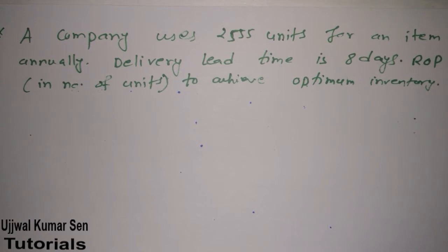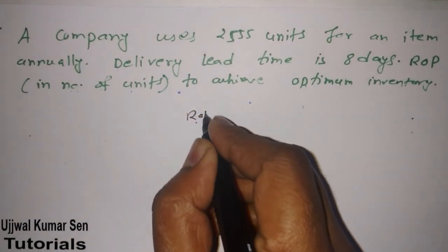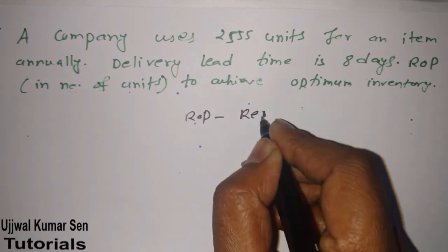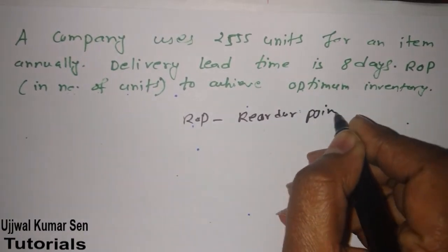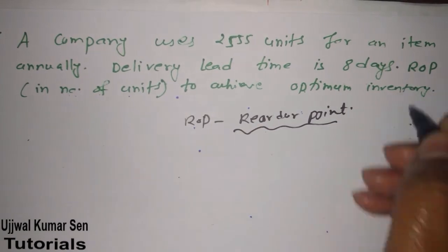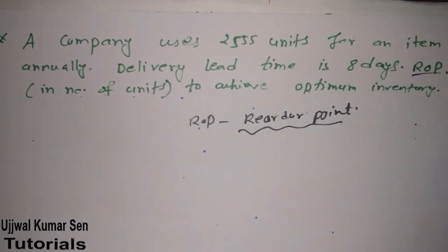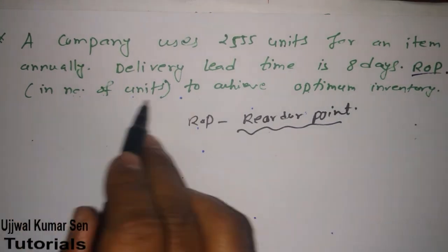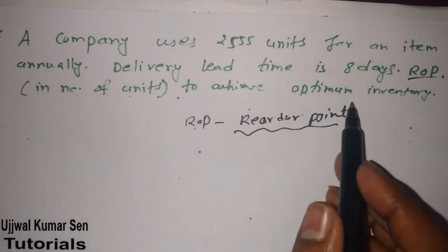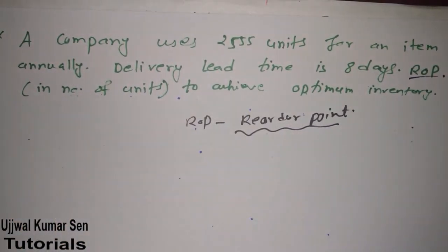In questions, you'll usually see 'reorder point' written out, not ROP in short. The reorder point in number of units is what we need to achieve optimum inventory.